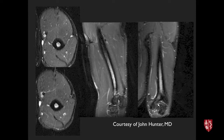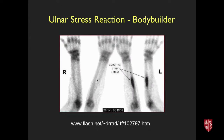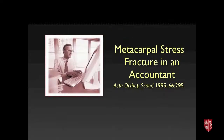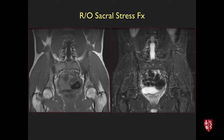Stress injuries of the distal humerus have been described in tennis players. Ulnar stress reactions have been reported in bodybuilders and rodeo riders. A metacarpal stress fracture has even been reported in an accountant. However, the vast majority of stress injuries remain in the lower extremity.